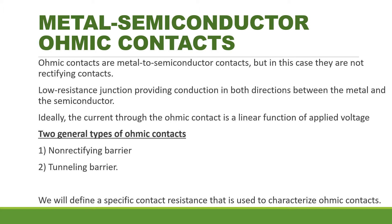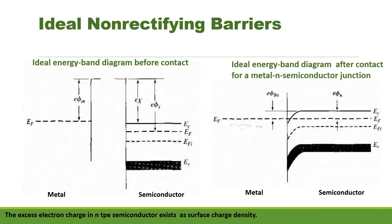We will define a specific contact resistance that is used to characterize ohmic contacts. Next, we consider the ideal non-rectifying barrier. Here, in this figure, the ideal energy band diagram before contact for a metal n-type semiconductor junction is shown.